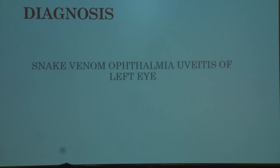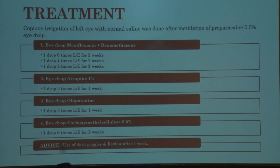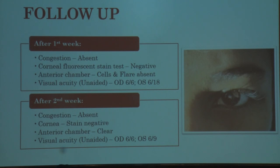A diagnosis of snake venom ophthalmic uveitis of the left eye was made. Treatment included copious irrigation of the left eye with normal saline after instillation of proparacaine 0.5%, combined moxifloxacin and dexamethasone drops 6 times daily for 2 weeks then tapered, along with atropine 1%, olopatadine, and carboxymethylcellulose 0.5%. At one-week follow-up, congestion reduced, fluorescent staining was negative, and cells and flare were absent. BCVA improved from 6/24 to 6/18. At two weeks, vision further improved to 6/9.